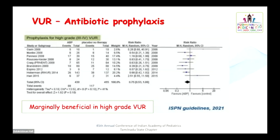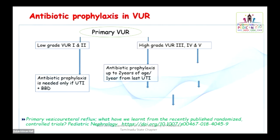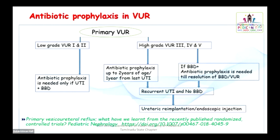The role of antibiotic prophylaxis in VUR: A recent meta-analysis by Hari et al. shows that in high-grade VUR, prophylaxis can be marginally beneficial. As a routine, we don't give antibiotic prophylaxis for children with low-grade reflux. For primary VUR, divide into low-grade or high-grade. For low-grade VUR, antibiotics are needed only if they have bowel-bladder dysfunction. For high-grade VUR, antibiotic prophylaxis can be given up to 2 years of age or 1 year from the last UTI episode. If BBD is present, antibiotic prophylaxis should be continued. For recurrent UTI without BBD, ureteric re-implantation or endoscopic injection can be considered.